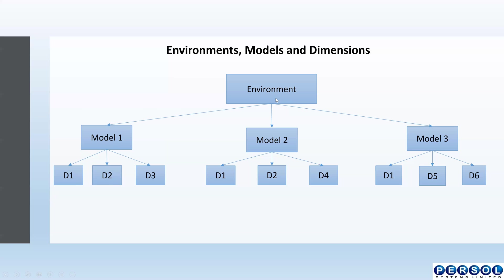Looking at the structure here, we are able to see the environment and three models created in the environment. We can also see different dimensions, and we realize that two dimensions are being used in two models and one dimension is being used in three models. This shows that we can have the same dimension being used by different models, but all these dimensions are in the same environment. All dimensions in the same environment can be used by multiple models.